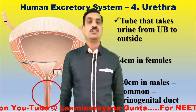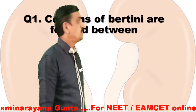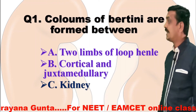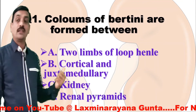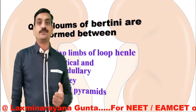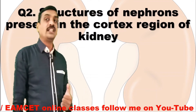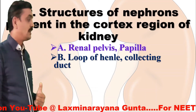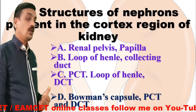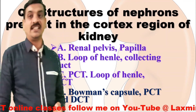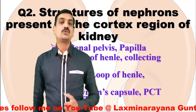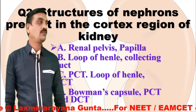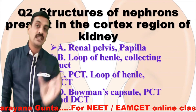Let us finish this session with a few questions. The first one: columns of Bertin are formed between which structures? The right option is renal pyramids. The next question: structures of nephrons present in the cortex region of the kidney — the correct answer is Bowman's capsule, PCT, and DCT, which are present in the cortex region of the kidney, whereas the loop of Henle may extend even into the medulla.